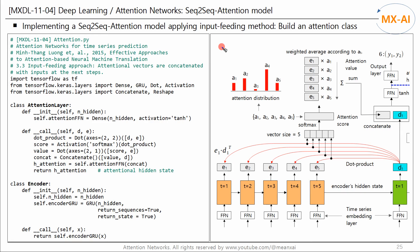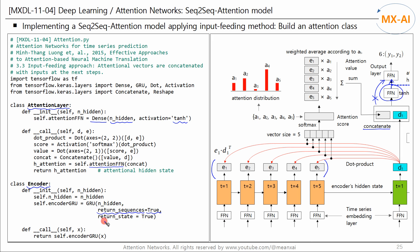Now let's implement this model in code. The attention layer class is identical to the code in the previous video. We just add a dense layer to the concatenate result. We set the output size of this layer to be the same size as the decoder output, and we use the hyperbolic tangent activation function. In the figure on the right, this layer is at this location. In the previous model, the concatenate result was passed to the output layer, but in this model, the output of this layer is passed to the output layer. Next, let's write an encoder class. The encoder is the same as the previous model. We need to use all the outputs from each time step, so we set the return sequences argument to true. We also set the return state argument to true to get the last hidden state that will be passed to the decoder.